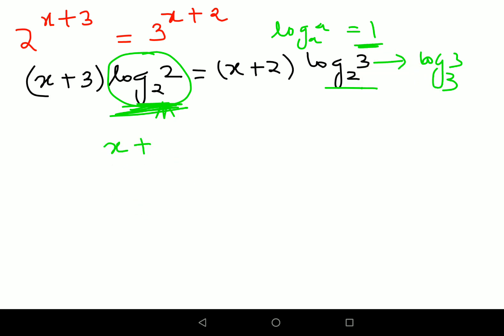So now obviously this is becoming 1, this value becomes 1, so you are just left with x plus 3 equals, let's open the bracket, so you have x into log of 3 to the base 2 plus 2 log of 3 to the base 2.